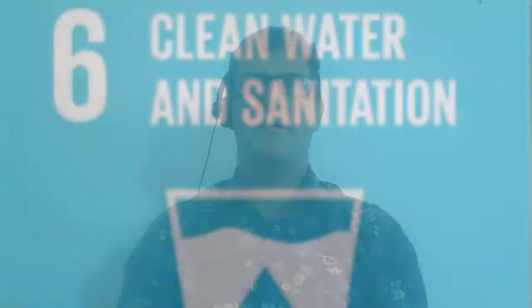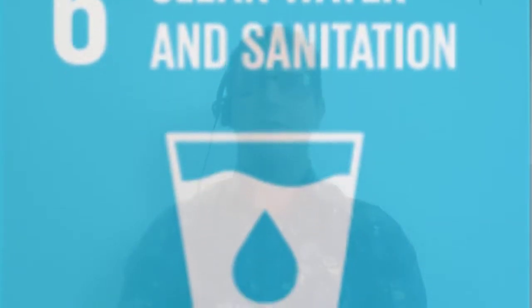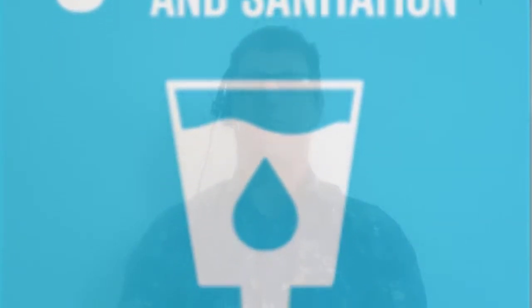Sustainable Development Goal 6 is outlined to ensure availability and sustainable management of water and sanitation for all. Chemical engineers can make the most positive impact on SDG 6 through developing finance for technical or bankable projects for developing countries.